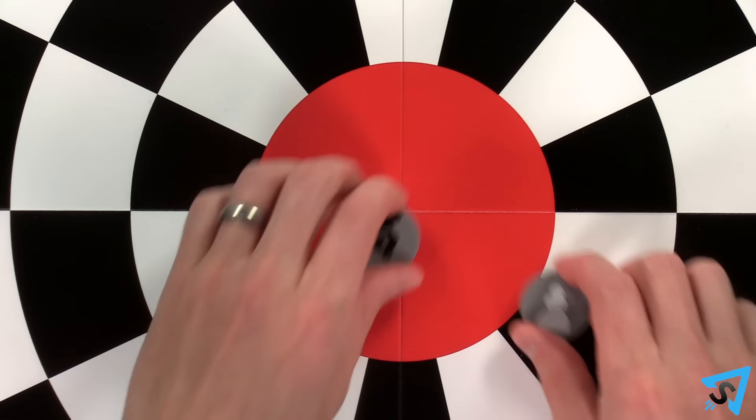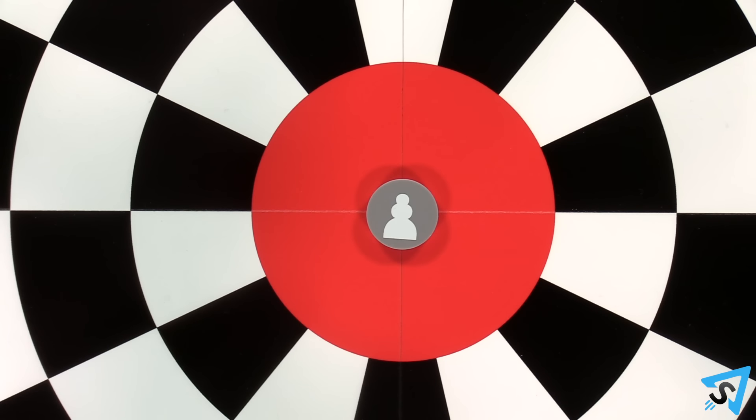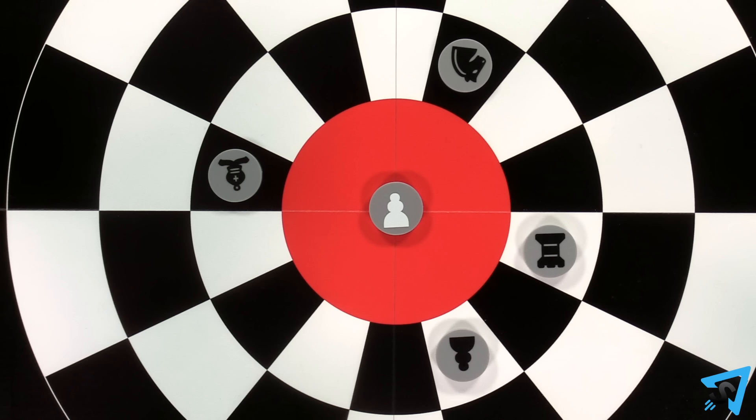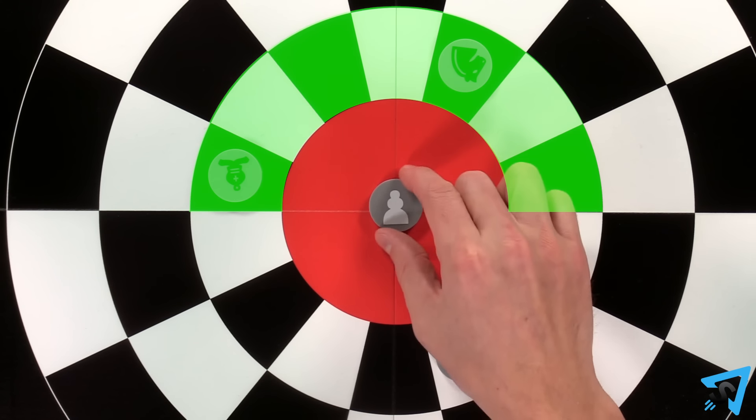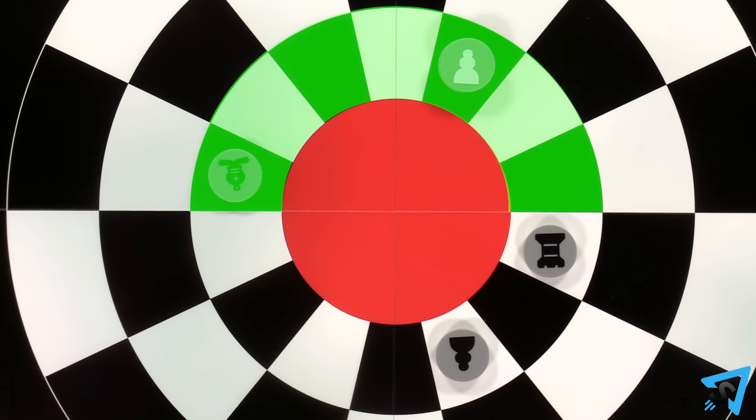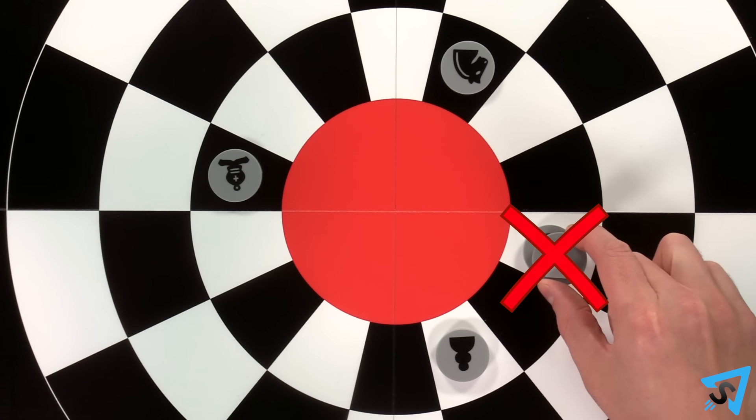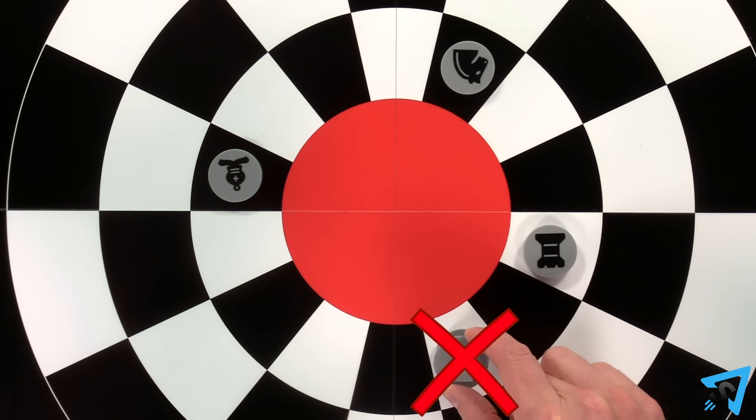Any of your pawns on your half of the board that are adjacent to the center may capture to the center. Your pawn in the center may capture to any adjacent space on your opponent's half of the board. You cannot capture backwards to any adjacent space on your own side of the board.